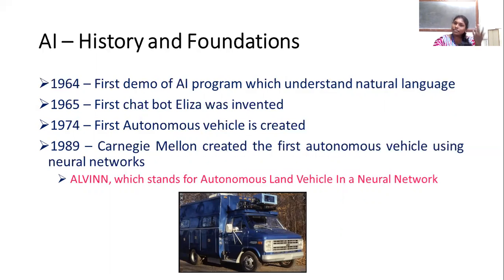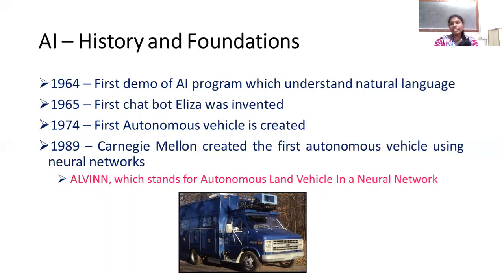Neural networks develop a network structure to think and process. The neural network-based vehicle was called ALVINN — Autonomous Land Vehicle In Neural Network. It used a camera and road map to navigate destinations, moving step by step.